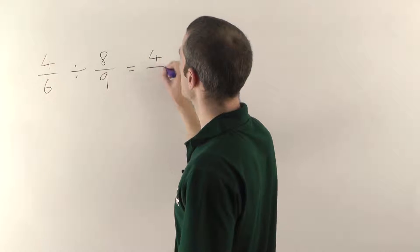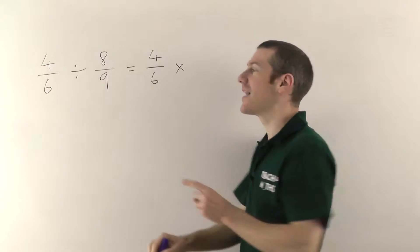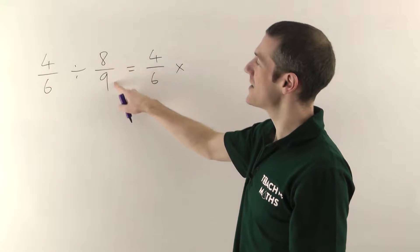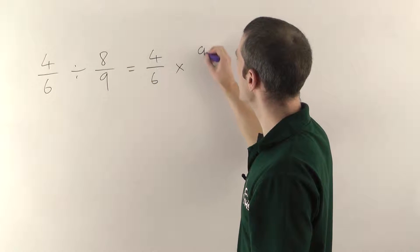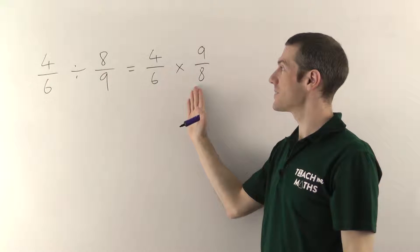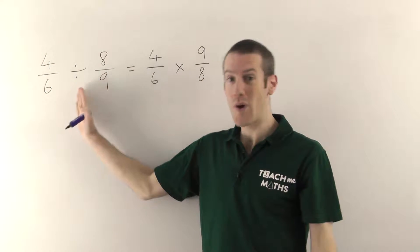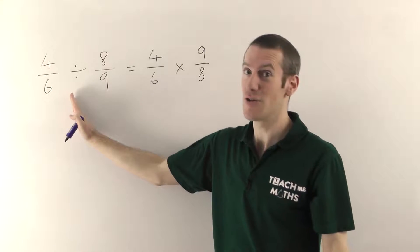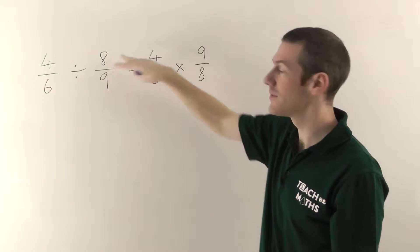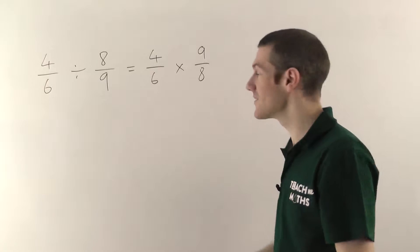What this chap discovered was that you can change a divide sign into a times sign as long as you take your second fraction and turn it upside down. So 8 ninths would become 9 eighths. Now it's a multiplication and we know how to multiply so you can just do that in the normal way. So the way you divide fractions is: you don't divide them at all — you change the divide into a times, take the second fraction and turn it upside down, and then you just follow all the normal rules for multiplication.